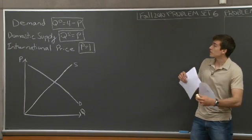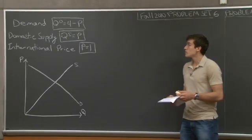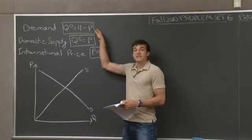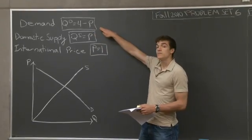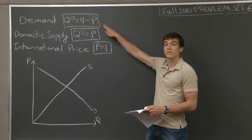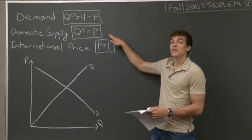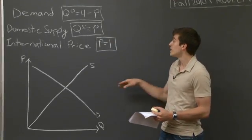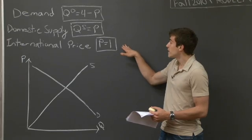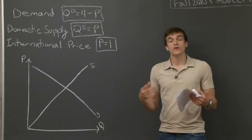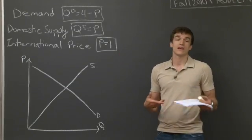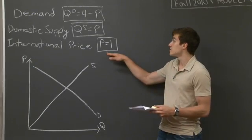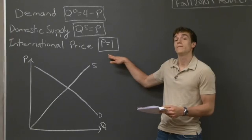In this problem we're going to be working with three different functions. The first is the domestic demand — how much people in Moldavia want barley. The domestic supply tells us how much the suppliers within the country are willing to supply. And the international price tells us, if we open up the borders to trade without any tariffs or barriers, what the new equilibrium price will become.